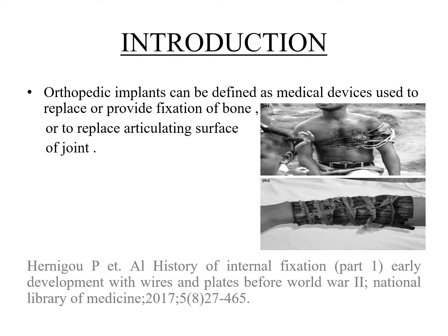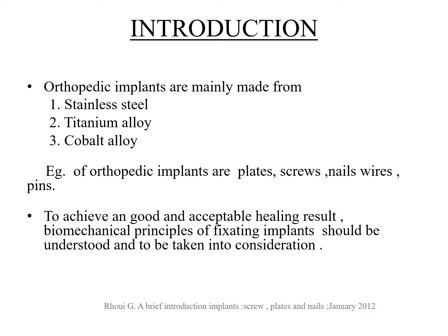An orthopedic implant is a medical device used to replace or provide fixation for bone, or to replace an articulating surface or joint. As seen in the images, early methods in the 1980s and 90s used plaster and wooden sticks for fracture stabilization. Modern implants include plates, screws, nails, wires, and pins.